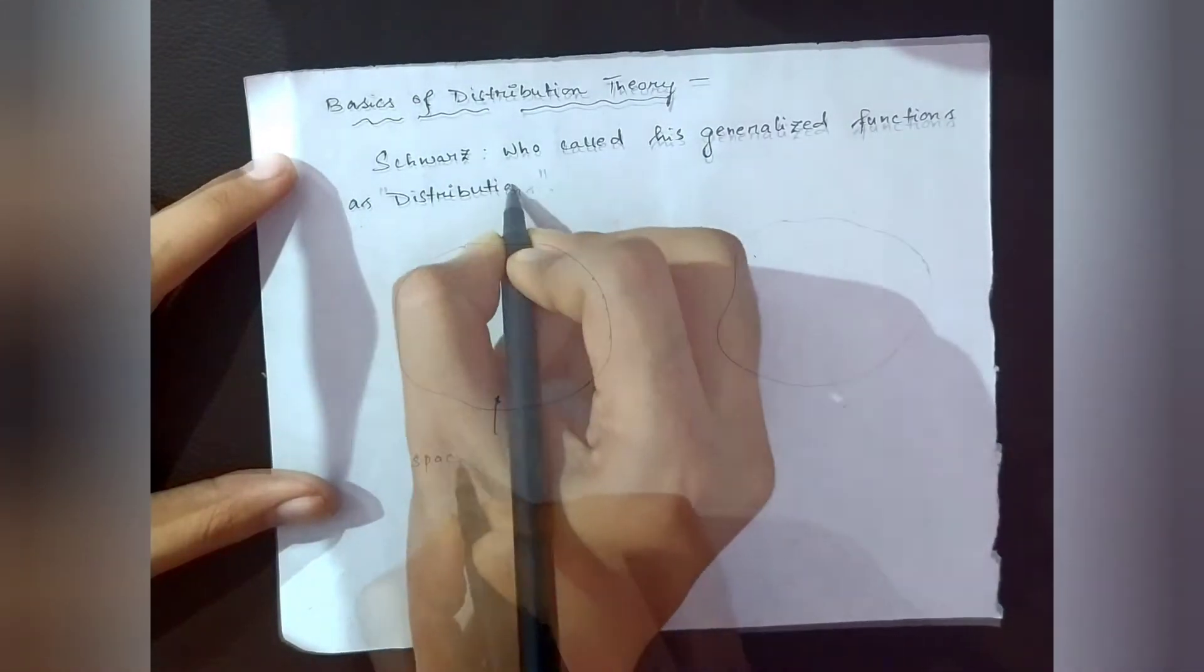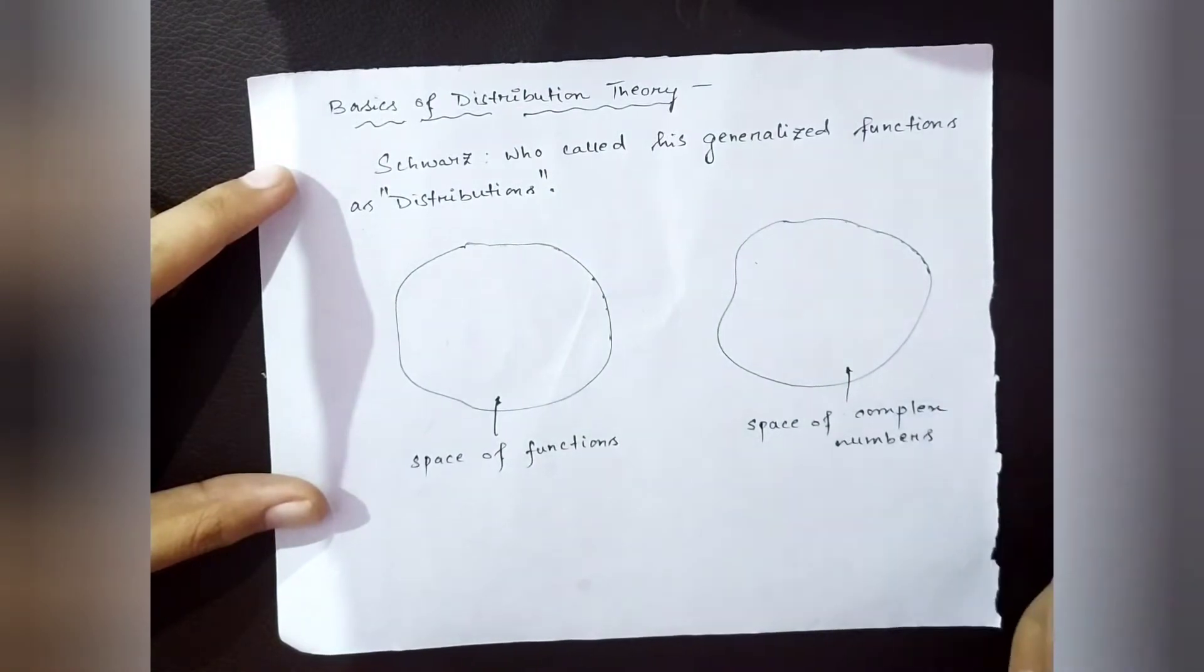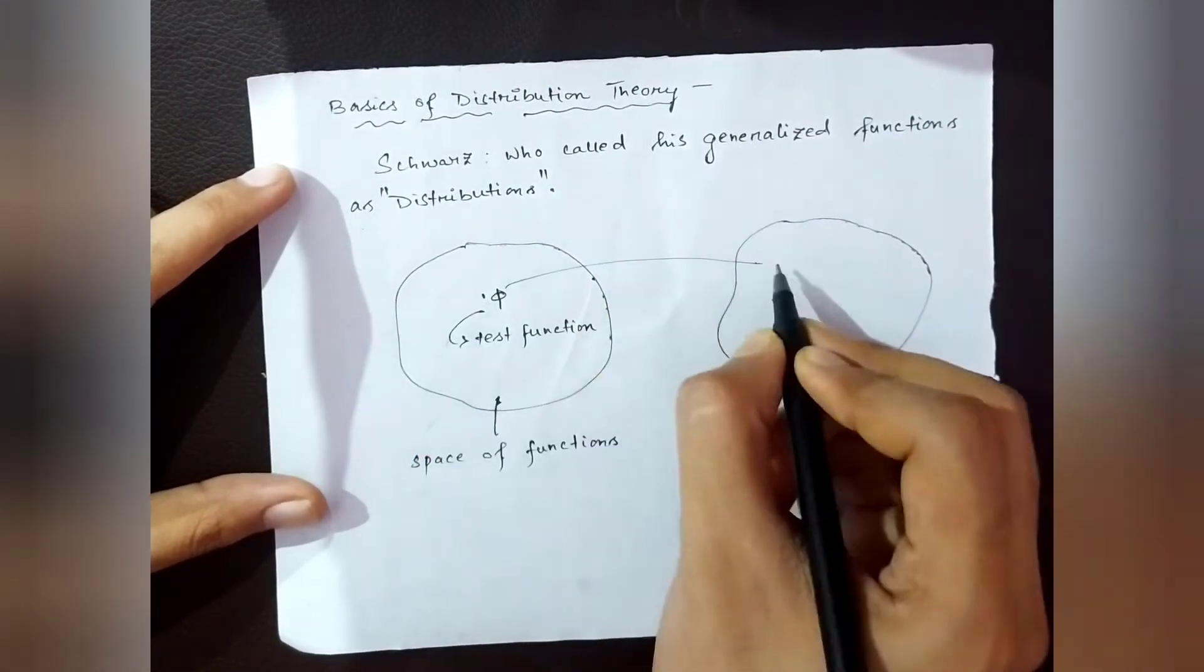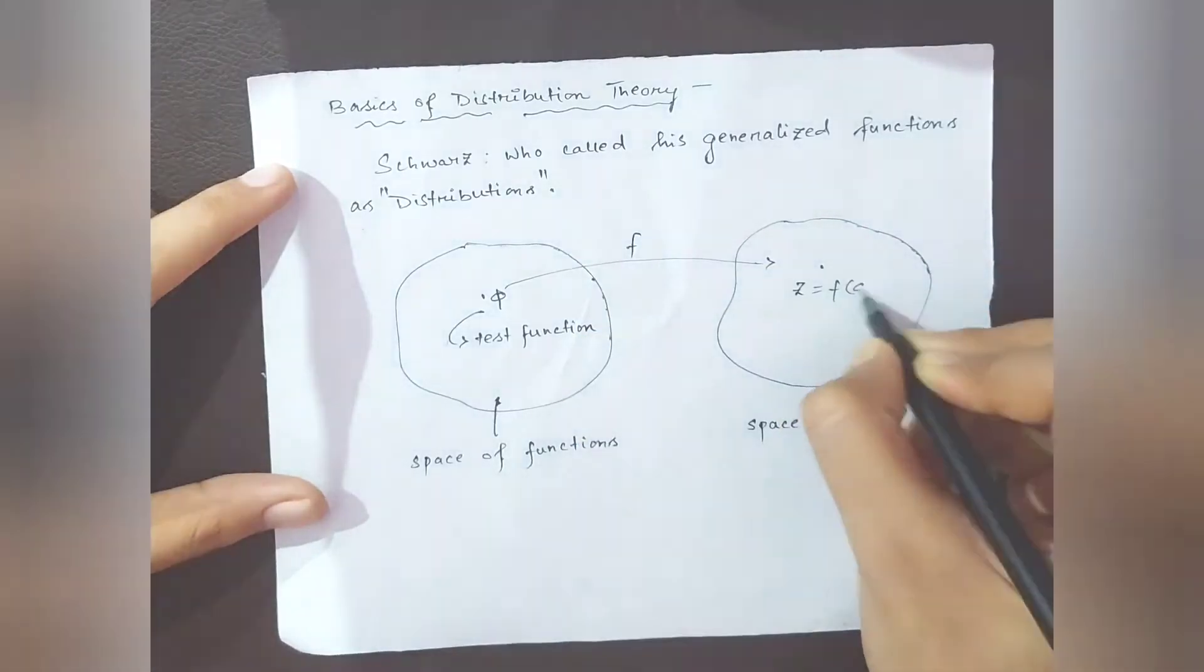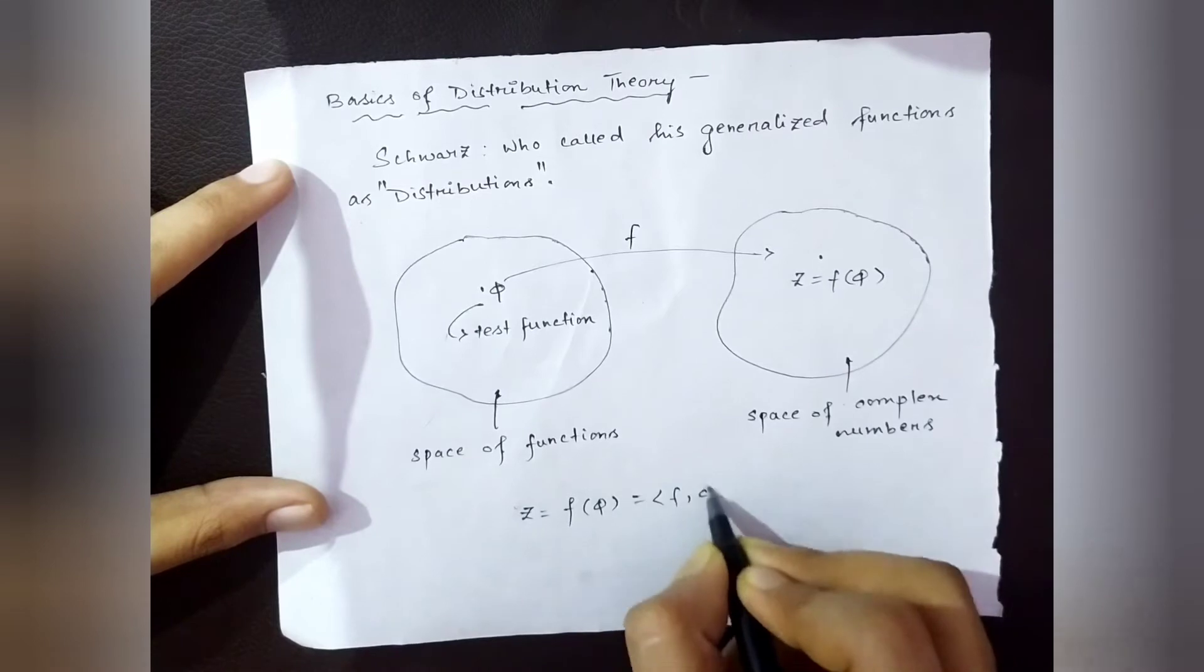Distributions map functions to numbers. To be precise, these functions are called test functions and the numbers we consider are complex numbers. Formally, distributions are functionals which assign every test function to a particular complex number. The numbers assigned to these test functions are denoted by these weird notations.